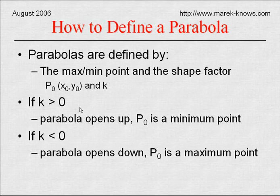If k is greater than 0 then the parabola will open upward and p naught will be the minimum point on the parabola. If k is less than 0 then the parabola will open downward and p naught will be the maximum point on the parabola. Let's take a look at some plots.